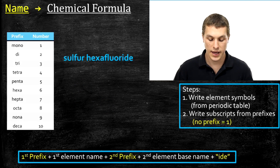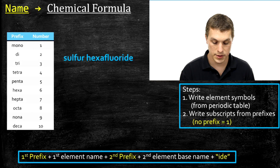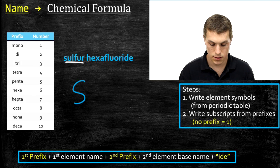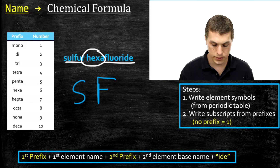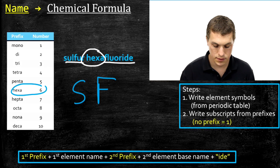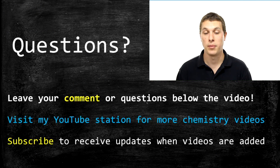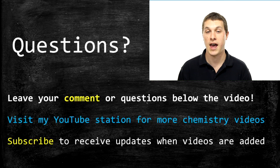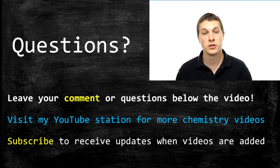The last example is sulfur hexafluoride. There's no prefix for sulfur, so we write S with a subscript of one. Fluoride gives us F, and the prefix hexa corresponds to six, so we write F6. Sulfur hexafluoride is SF6. We use these prefixes to tell us how many of each element type we have, and for the second element we use the base name plus -ide. Thanks for watching Real Chemistry.